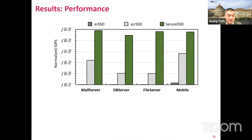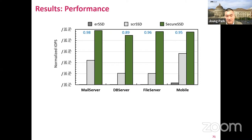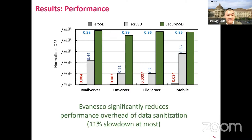The second optimization is cross-layer interaction for selective data sanitization. We envision a system where the user application can inform the SSD of each data's security level through the file system. When the user writes a security-sensitive file, the application sends this information to the SSD so that the SSD can track the security level of related pages. When the user deletes a security-insensitive file, the SSD performs neither P-Lock nor B-Lock, avoiding performance overhead due to unnecessary sanitization.